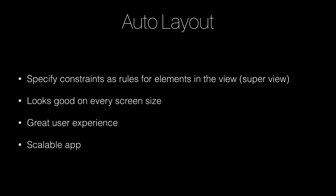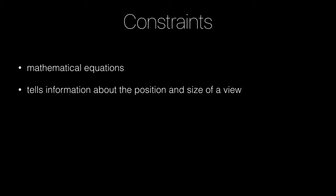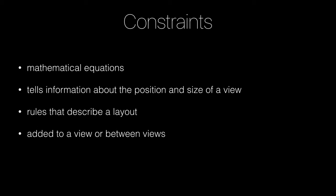So now all of these AutoLayout things seem to come down to constraints. What are those constraints, and why do we want to use them? Constraints are just mathematical equations. Luckily, we don't have to go deep into the mathematics. The constraint tells the information about the position and the size of a view — this is really important. Constraints have to tell Xcode, have to tell iOS, the information about the position and the size of a view. The constraints are the rules that describe this layout. They will be added to a view or between different views. And the constraints, in order to work on every screen size so that the UI looks good, we must have an unambiguous constraint.